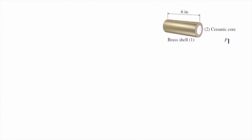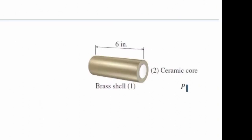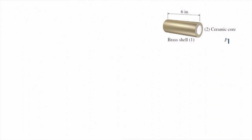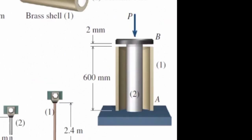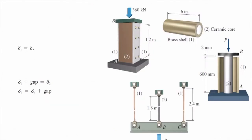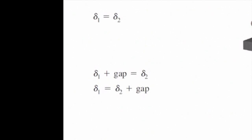What is the compatibility condition when one element is inside the other? In that case the deformations are equal to each other — not opposite — because one is within the other. So we write delta one equals delta two. If there is a gap, it should be added to the side with less change in length. These cases belong to category number two: one element within another element.